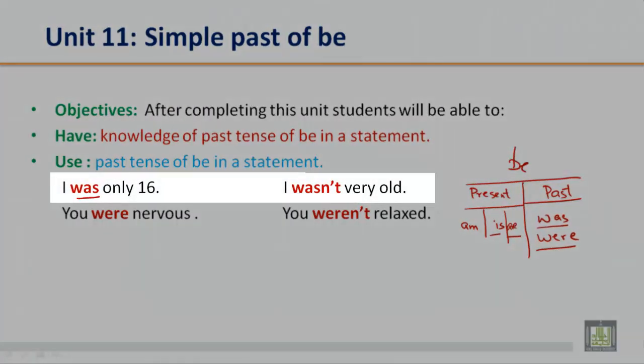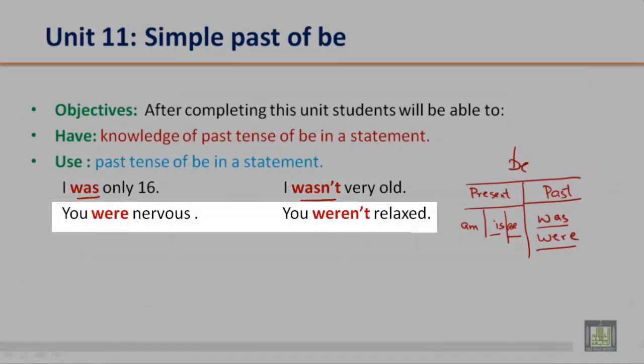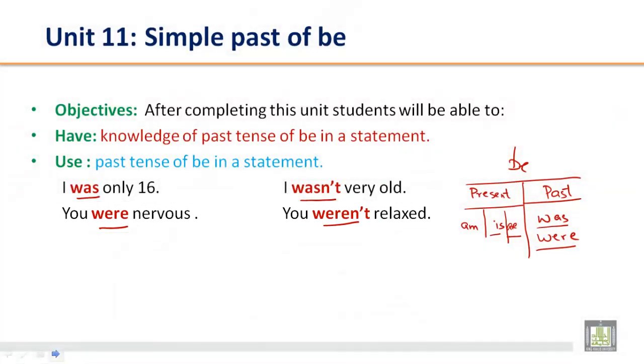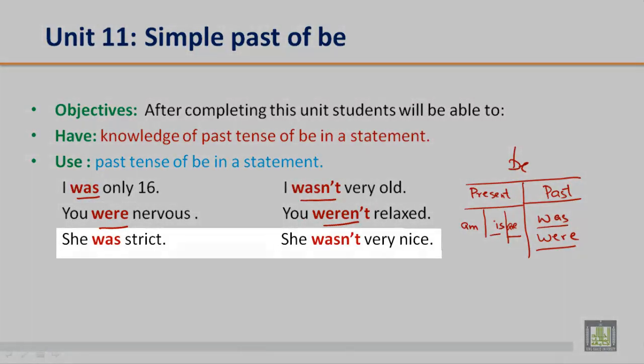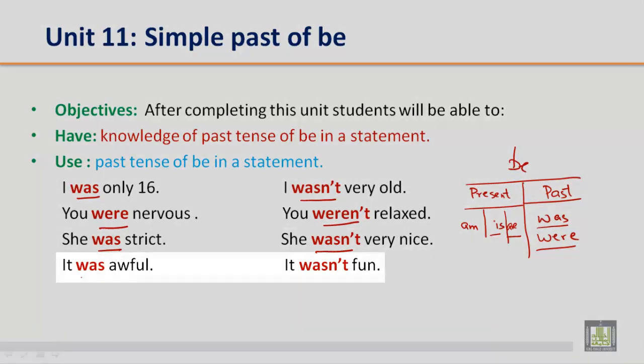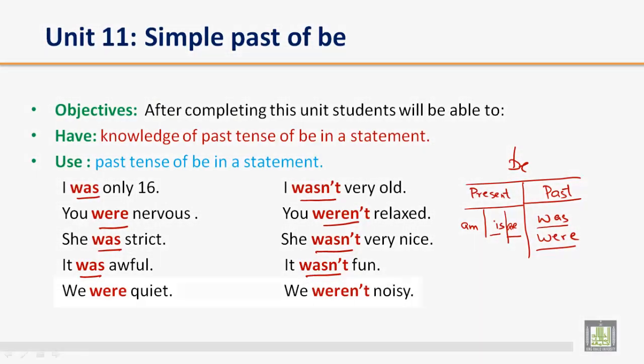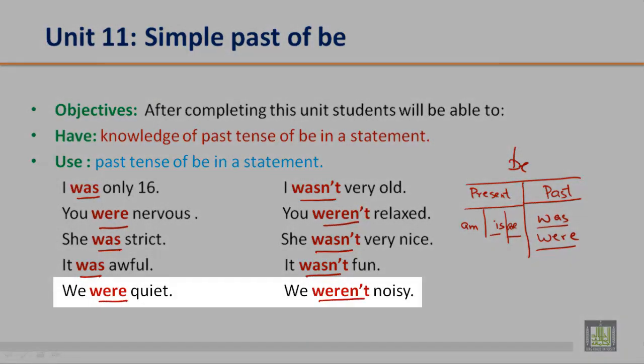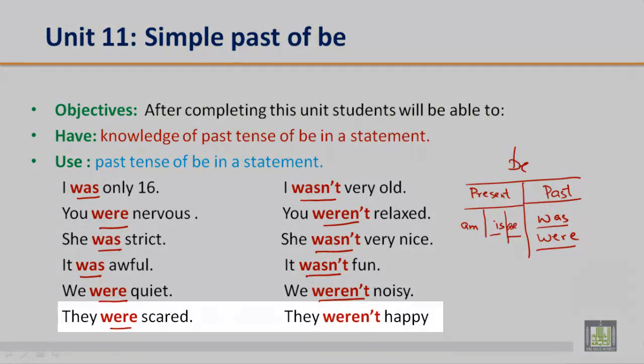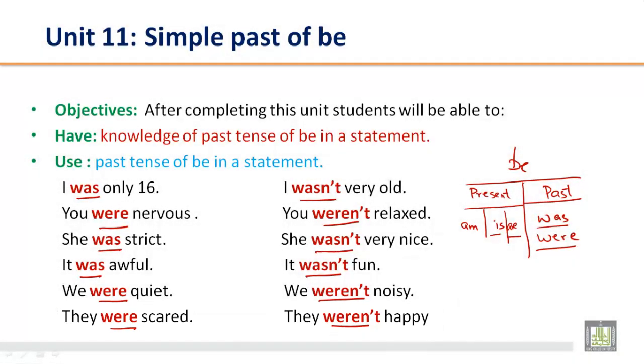I was only 16. I wasn't very old. You were nervous. You weren't relaxed. Let us look at the next sentence: She was strict, she wasn't very nice. It was awful, it wasn't fun. We were quiet, we weren't noisy. They were scared, they weren't happy.